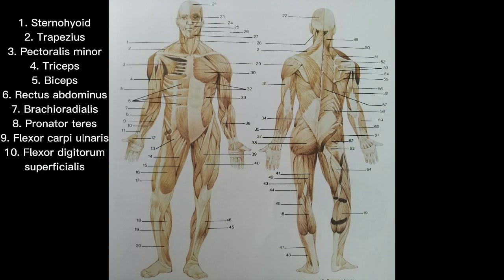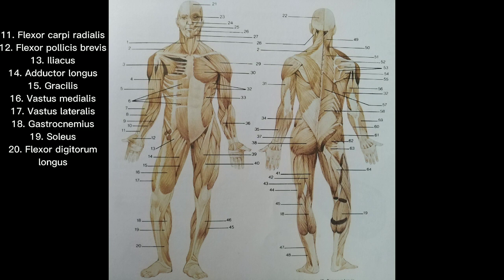The front muscles of the human body include: 1. Sternohyoid, 2. Trapezius, 3. Pectoralis minor, 4. Triceps, 5. Biceps, 6. Rectus abdominis, 7. Brachioradialis, 8. Pronator teres, 9. Flexor carpi ulnaris, 10. Flexor digitorum superficialis, 11. Flexor carpi radialis, 12. Flexor pollicis brevis, 13. Iliacus, 14. Adductor longus, 15. Gracilis, 16. Vastus medialis, 17. Vastus lateralis, 18. Gastrocnemius, 19. Soleus, 20. Flexor digitorum longus.